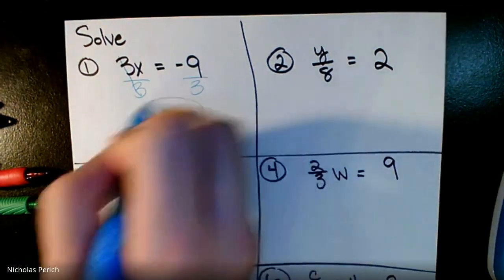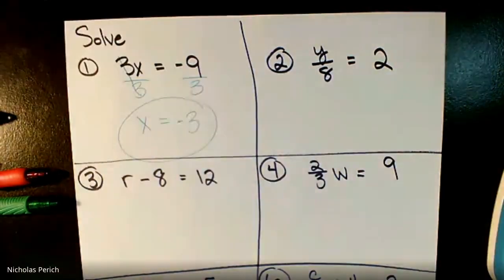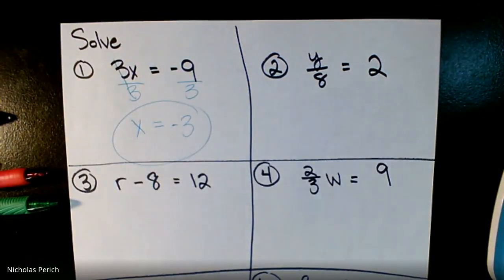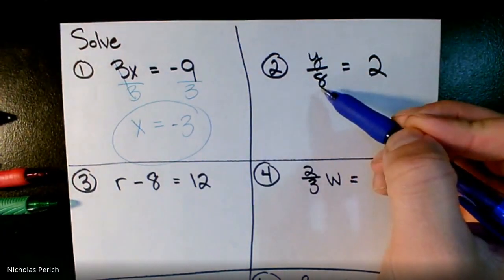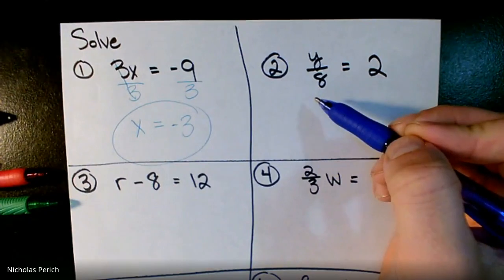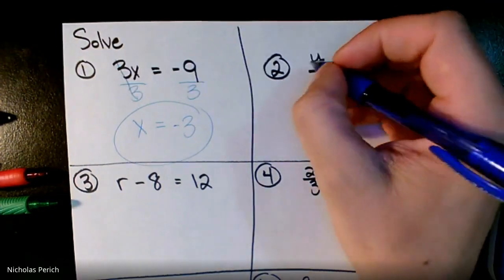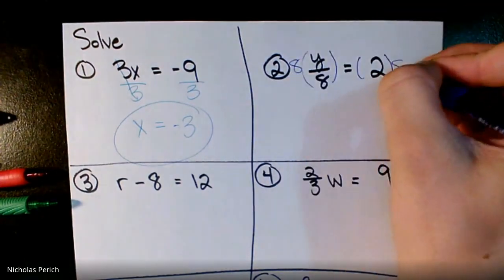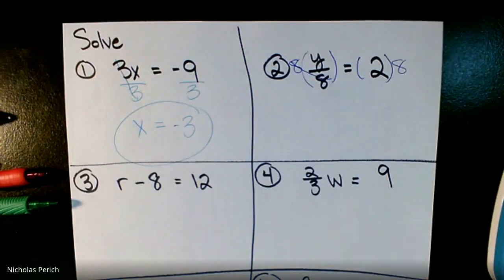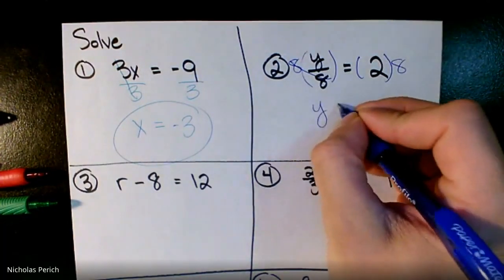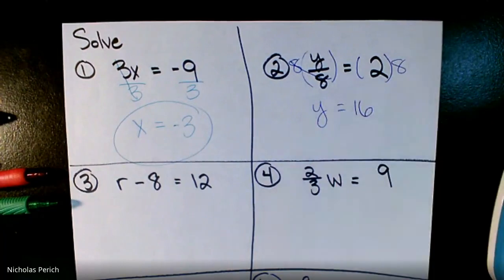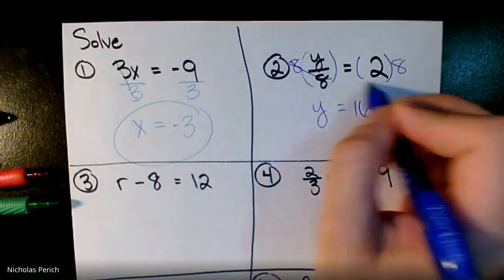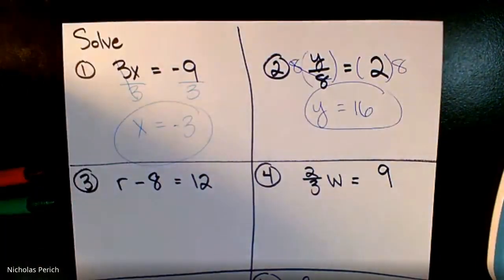Is y all by itself? No — divided by eight is in the way. How do I get rid of a divided by eight? Do the opposite of divided by eight: multiply by eight. Multiply both sides by eight, cross it out. y equals two times eight, which is 16. Is y all by itself now? Mm-hmm — dunzo.